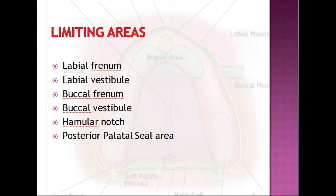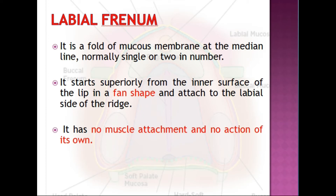The limiting structures of the maxillary arch are: the labial frenum, labial vestibule, buccal frenum, buccal vestibule, hamular notch, and the posterior palatal seal area. The labial frenum is a fold of mucous membrane at the median line, normally single and sometimes double. It is a thick band of mucosa connecting the mucosa of the alveolar ridge to the upper lip, starting superiorly from the inner surface of the lip in a fan shape and attaching to the labial side of the ridge.